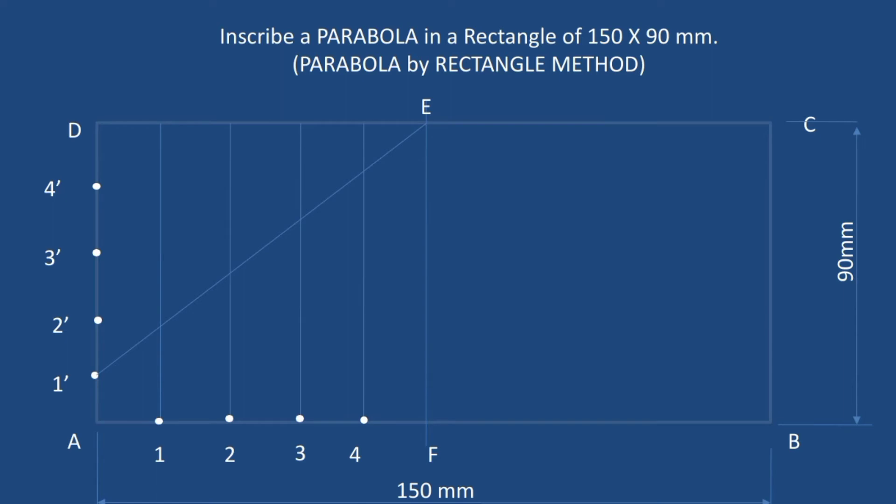The intersection of the lines from 1 and 1 dash will give you the first point P1. Similarly, join the point E with 2 dash. The intersection of the line from 2 and 2 dash will give you P2.